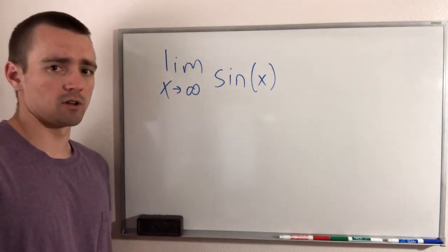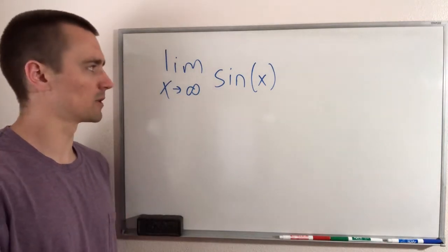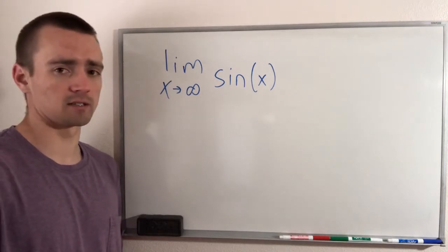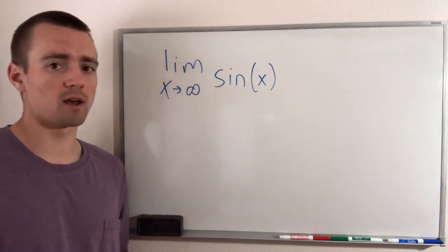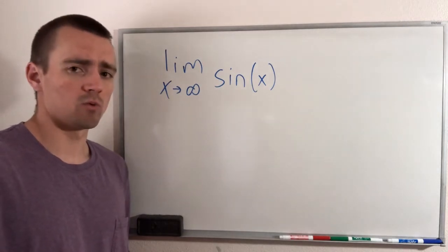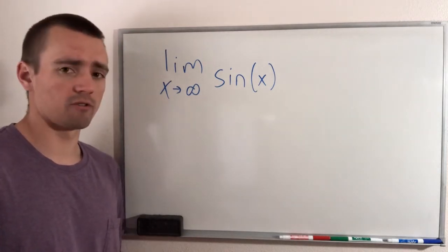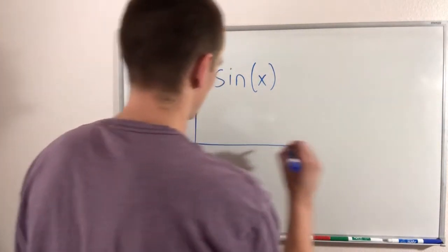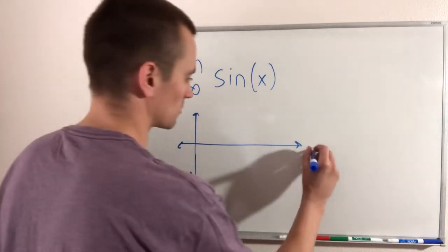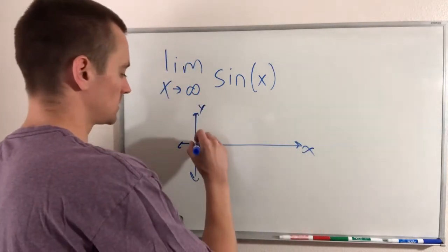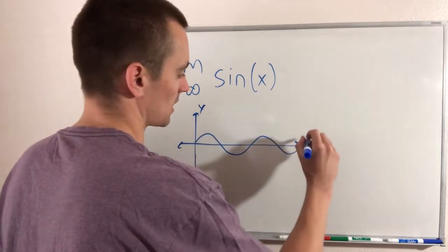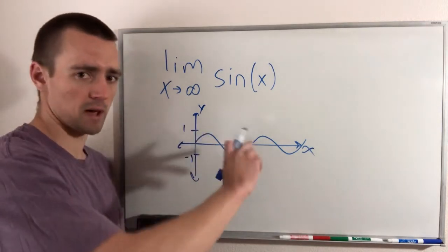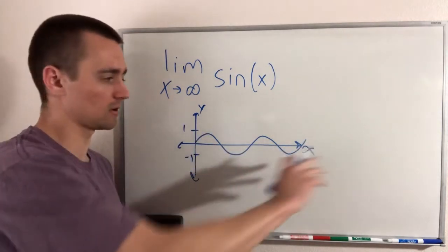What you want to think about when you're solving a limit like this — and not just sin x but also if we were taking the limit as x goes to infinity of cos x or tangent x — the same kind of idea would apply to all three. What you want to do is think about what the graph of this function looks like. If you think about graphing this on an xy axis, sin of x would look something like this, just going back and forth between negative one and one, and it'll just keep this pattern going as x goes to infinity.